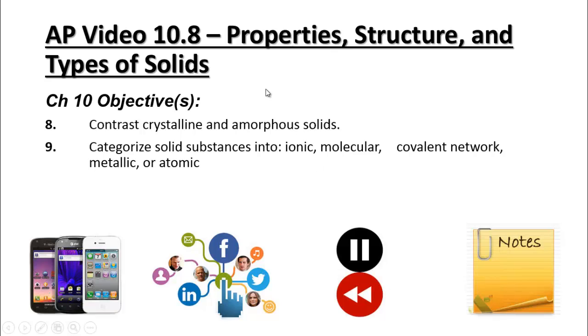Welcome to AP video 10.8. Here we're looking at the properties, structure, and types of solids. My objectives here are to be able to contrast the different types of solids, crystalline and amorphous solids, and to look more closely at crystalline solids and be able to classify them as ionic, covalent or molecular, covalent network, metallic, or atomic.